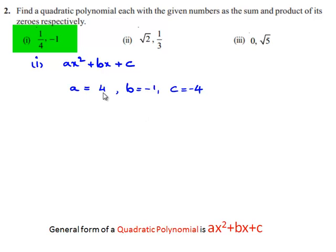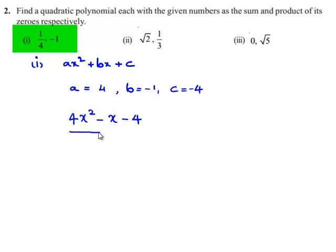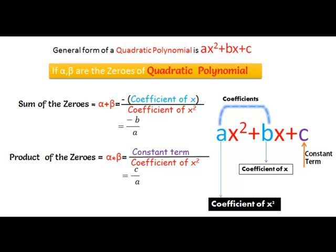Now, substituting the values of a, b, and c in the polynomial ax² + bx + c, we will be getting the polynomial as 4x² minus x minus 4. Hence, the required polynomial is 4x² minus x minus 4.